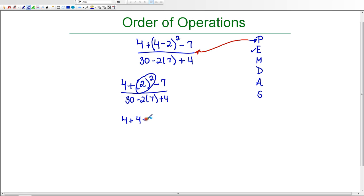And now in the numerator I have all addition and subtraction. I have no multiplication or division, and I need to evaluate the addition and subtraction in order from left to right. So 4 plus 4 is 8.